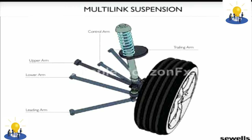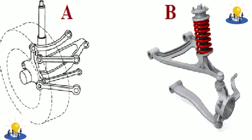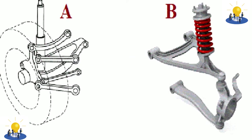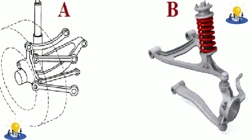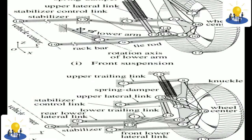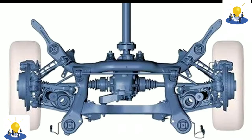This suspension also has component ends that pivot on two sides of the arm. Construction is made by manipulating the direction of the force that will be received by the wheel. Multi-link is a type of suspension that has quality grip, and with this suspension, controlling the car becomes easier.